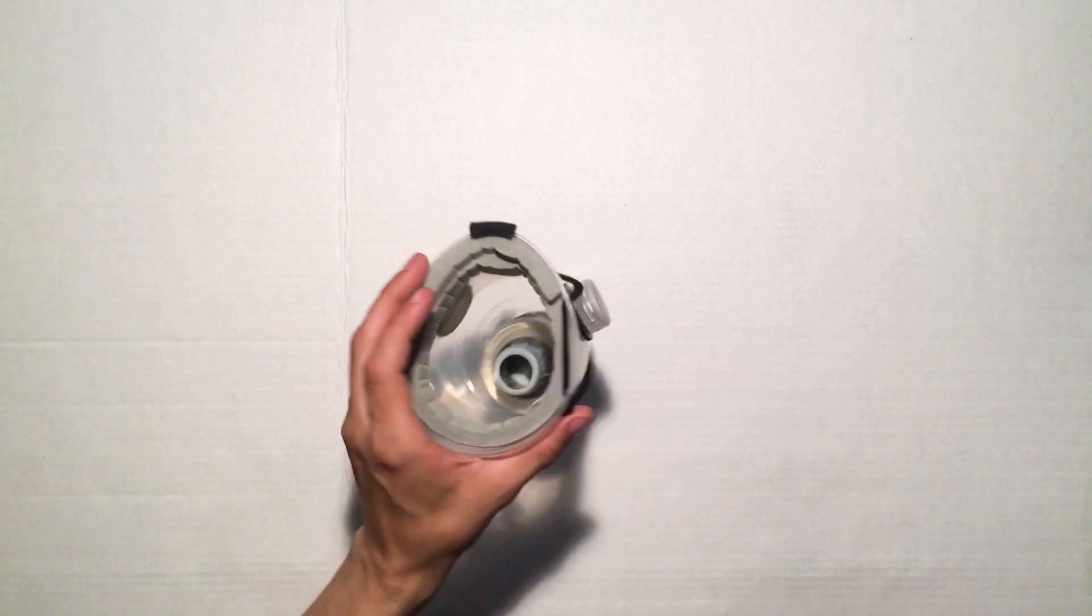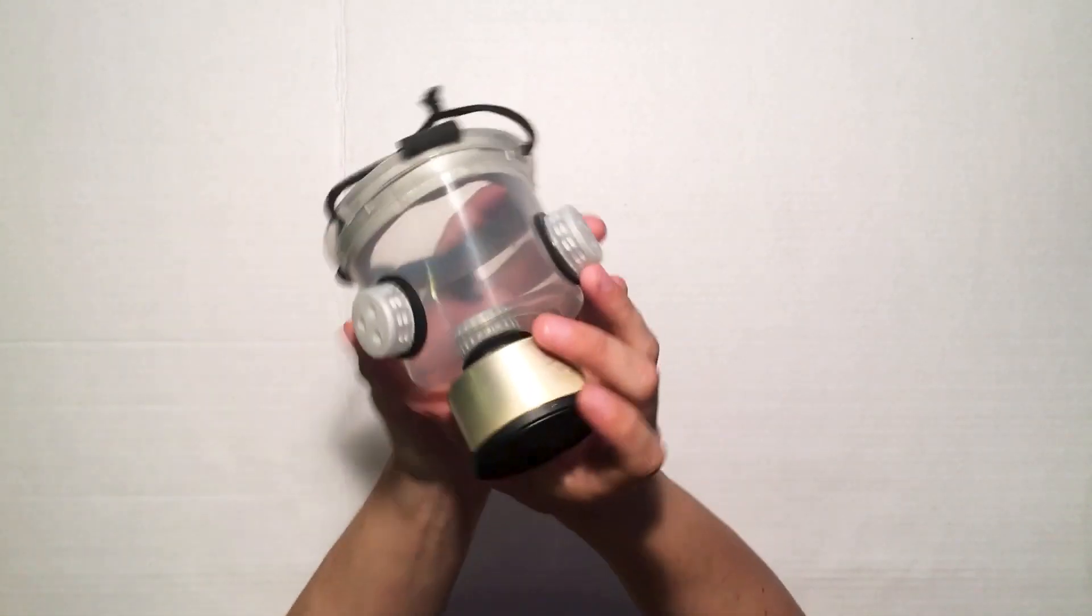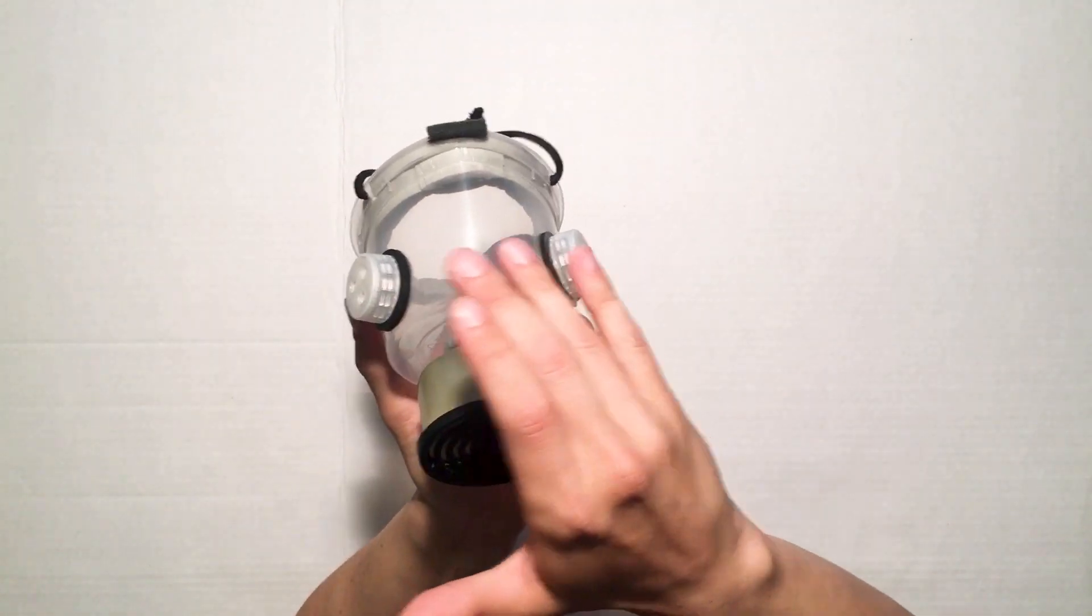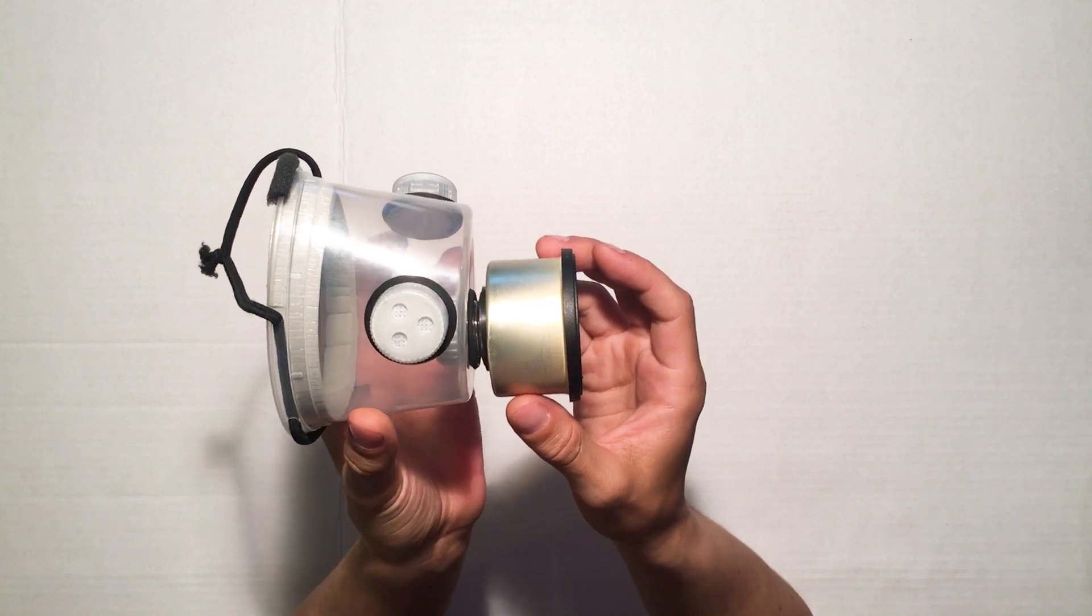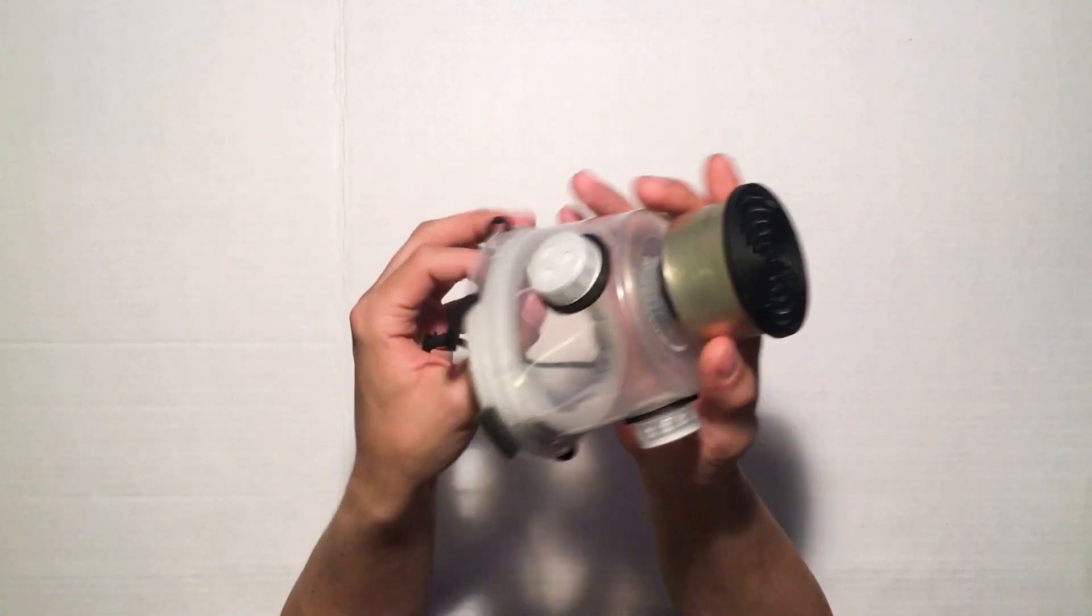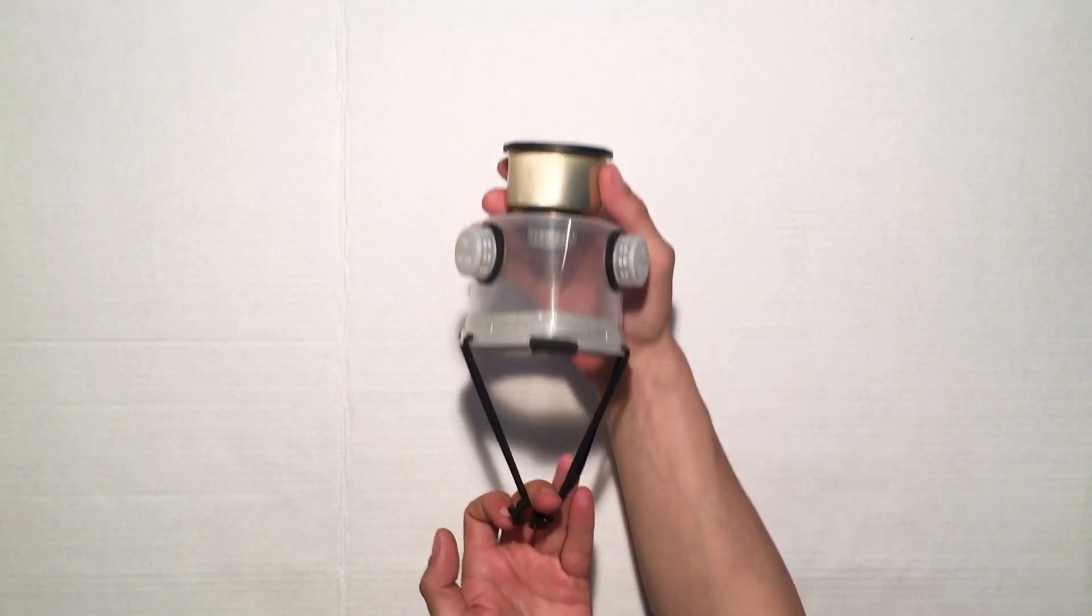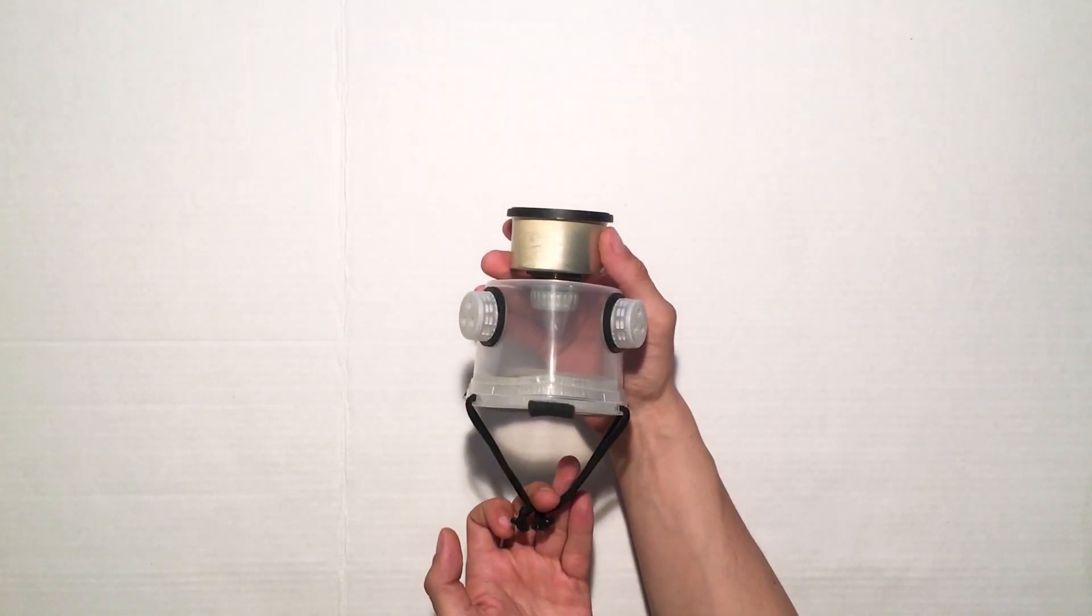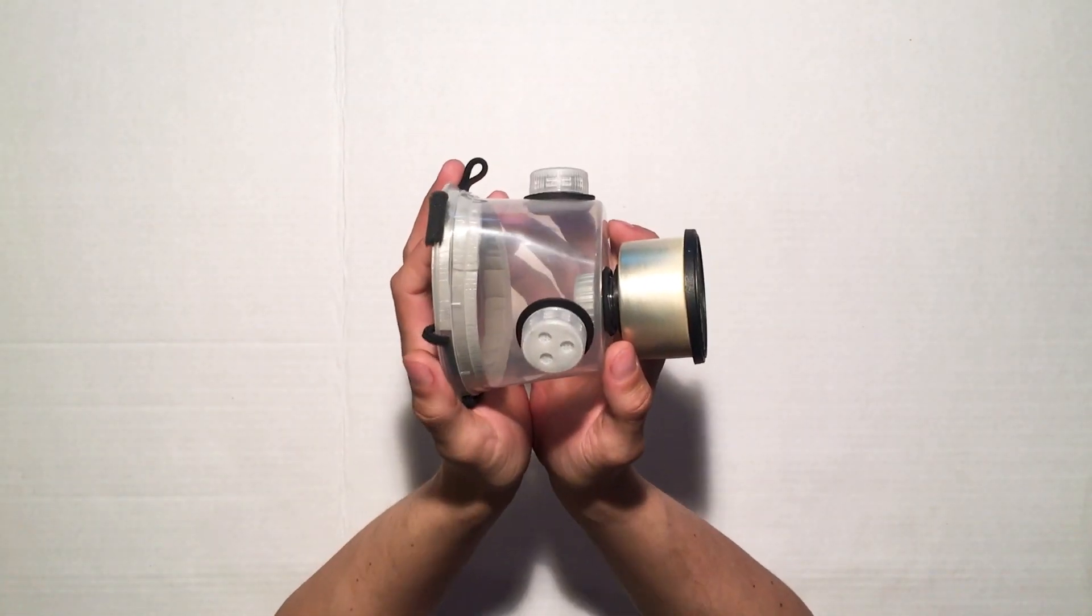By now, you'll have noticed there are two valves at the top of the mask. They are made from soda bottles and they act as exhalation valves, so the mask will not lift off your face as you breathe out. And it will stop your glasses or your goggles from steaming up.